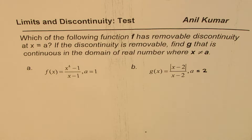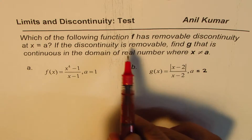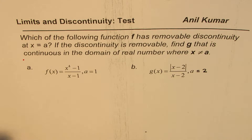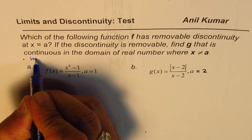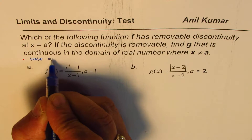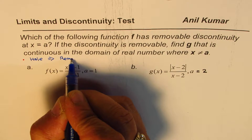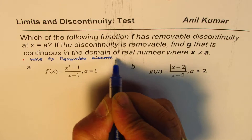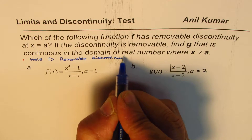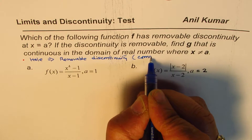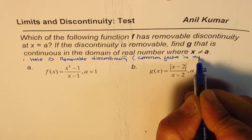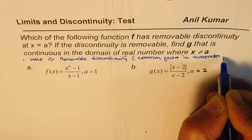You can pause the video, answer the question, and then look into my suggestions. Now, when we are talking about removable discontinuities, here's a small note: we are looking for a hole. If there is a hole, it means it is a removable discontinuity. And when will you have a hole? You will have a hole when there is a common factor in the numerator and denominator.